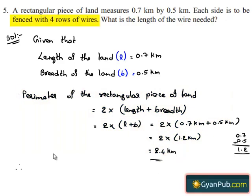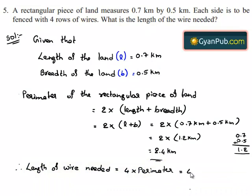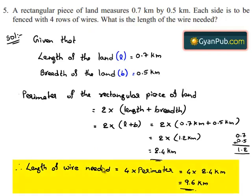Each side is to be fenced with 4 rows of wires, so the length of wire needed is equal to 4 times the perimeter of the rectangular piece of land, which is 4 times 2.4 km = 9.6 km. Therefore, the length of wire needed to fence the rectangular piece of land is 9.6 km.